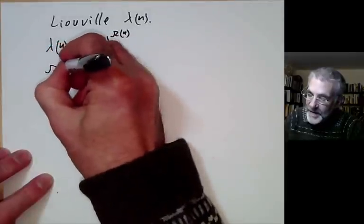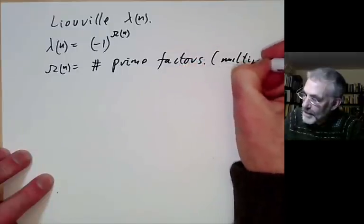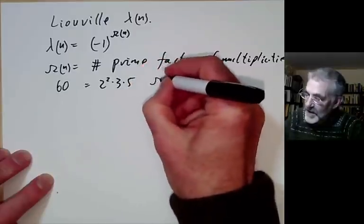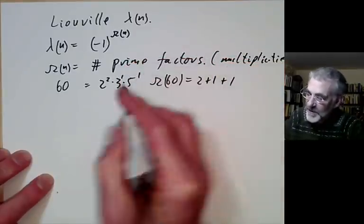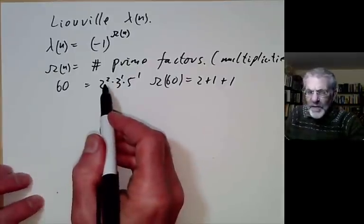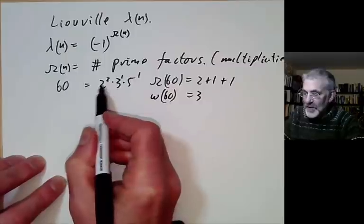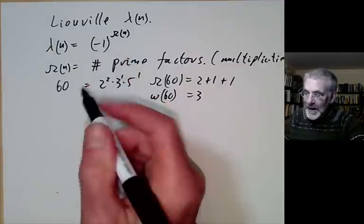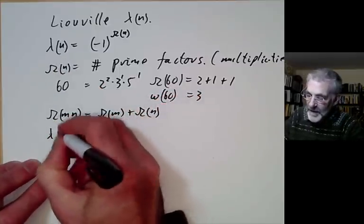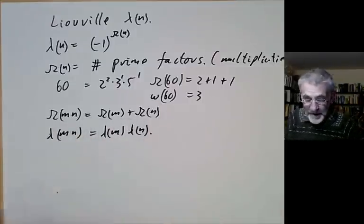Ω(n) is equal to the number of prime factors counted with multiplicities. For example, if you take the number 60, which equals 2² × 3 × 5, then Ω(60) = 2 + 1 + 1 = 4. If you don't want to count primes with multiplicity, there's another function called little ω, where ω(60) would just be 3. You can notice that Ω(mn) = Ω(m) + Ω(n), which easily implies that λ(mn) = λ(m)λ(n). Little ω doesn't have this property, so it's harder to deal with.